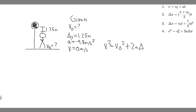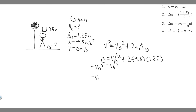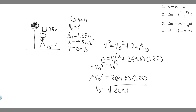The equation is v² = v₀² + 2a·Δy. Plugging in: zero squared equals v-sub-zero squared plus 2 times negative 9.8 times 1.25. Rearranging, we get minus v-sub-zero squared equals 2 times negative 9.8 times 1.25. The negatives cancel on both sides, so we take the square root of 2 times 9.8 times 1.25. Calculating this gives v-sub-zero equal to approximately 4.95 meters per second.